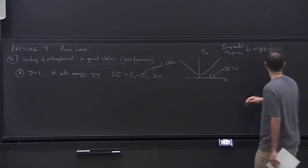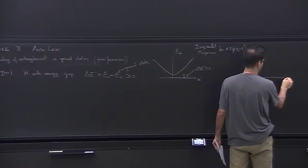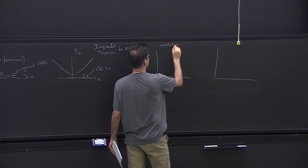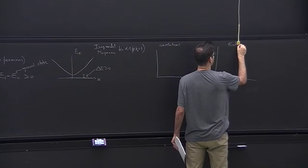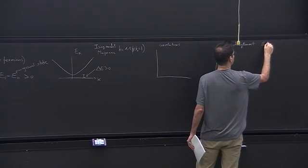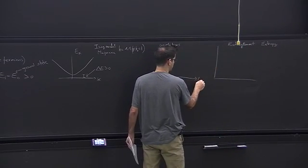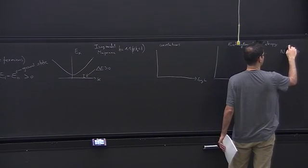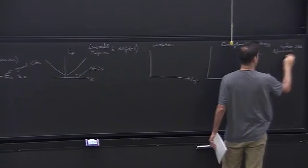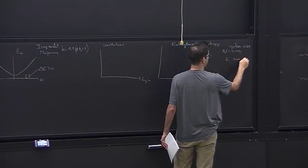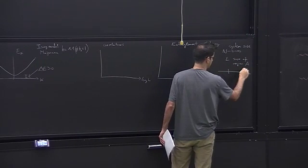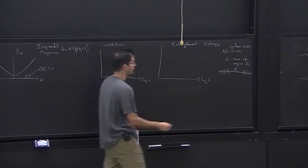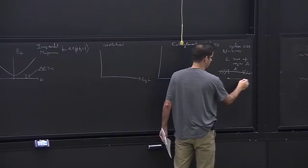Once we have such a Hamiltonian with this gap, we can ask questions about the ground state. I'm going to plot two different things: first, correlations, and then entanglement entropy. I'm plotting these as a function of the logarithm of L, where N — the system size — is taken to infinite, and L is the size of region A. We divide the system into two pieces, A and the rest, trace out the rest, and ask questions about region A.